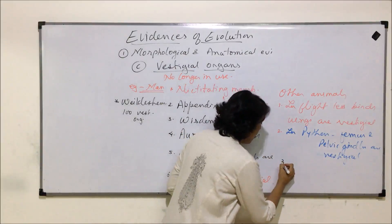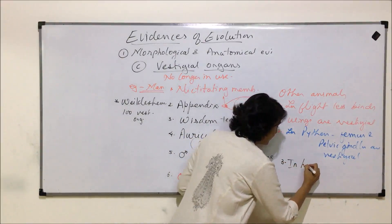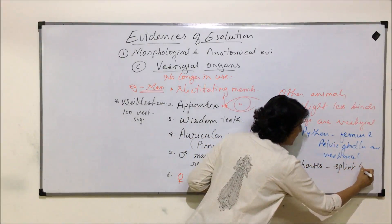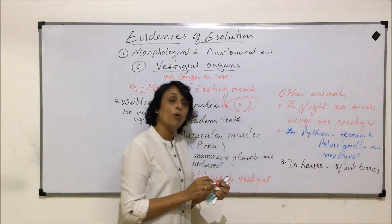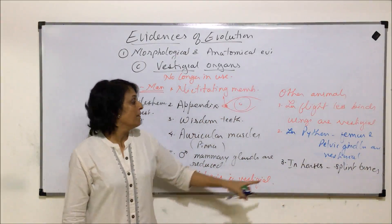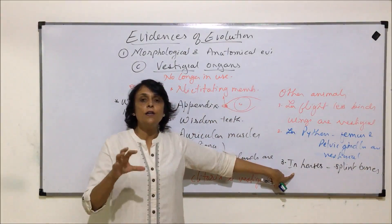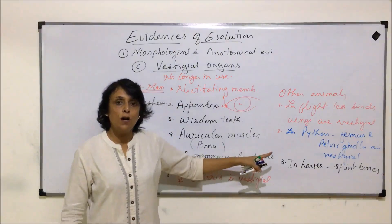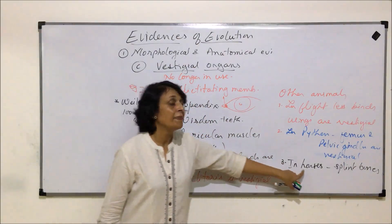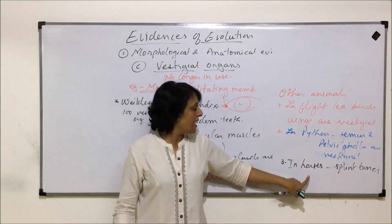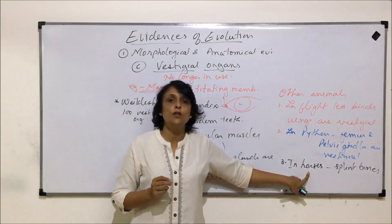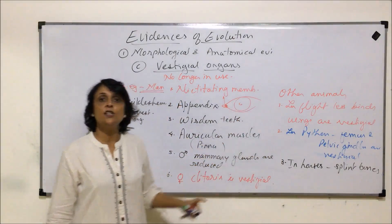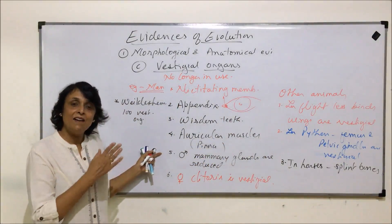Similarly, in horses we find splint bones, which are reduced digits. In horses it is the third digit that has elongated and become strong. The remaining digits have been highly reduced in the form of very thin bones known as splint bones. Vestigial organs help us trace evolution by indicating that the ancestors of present-day animals had those structures, and as evolution took place those structures were no longer needed.